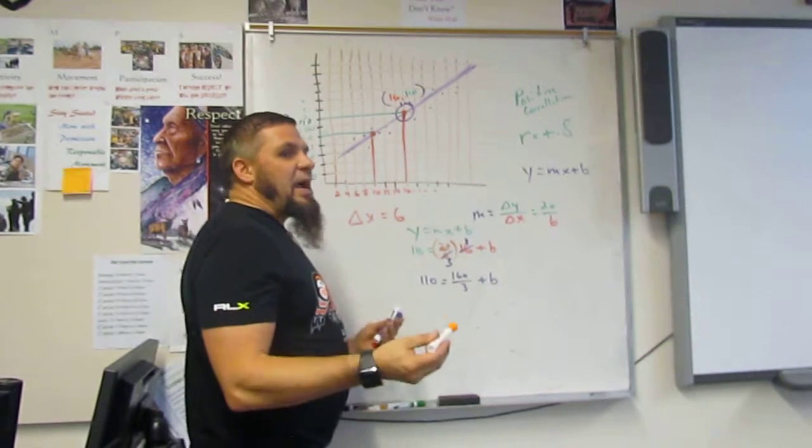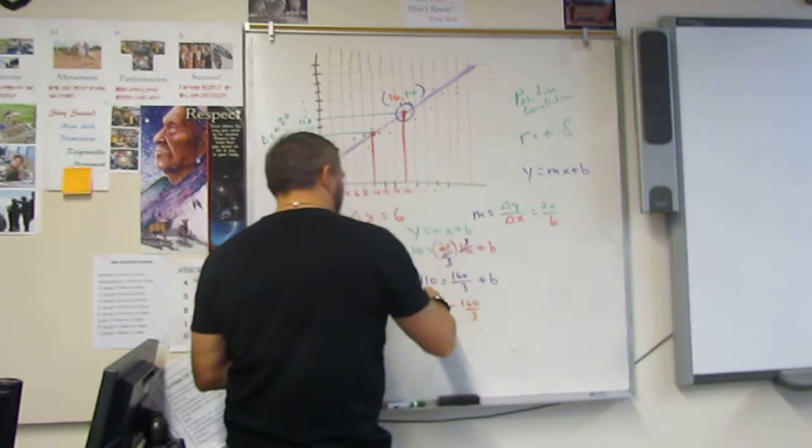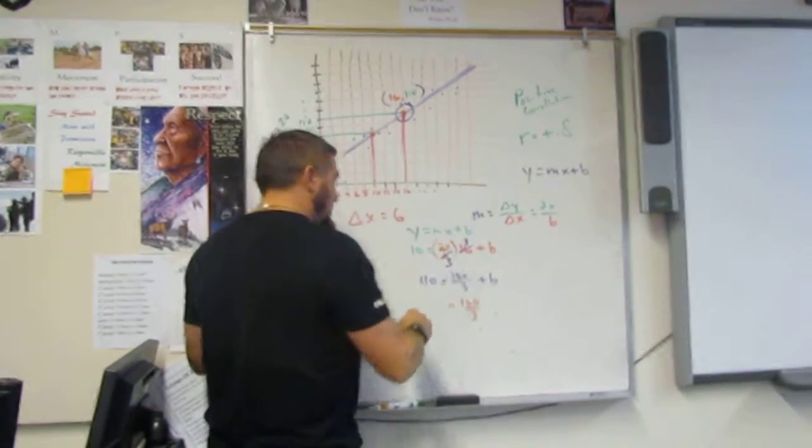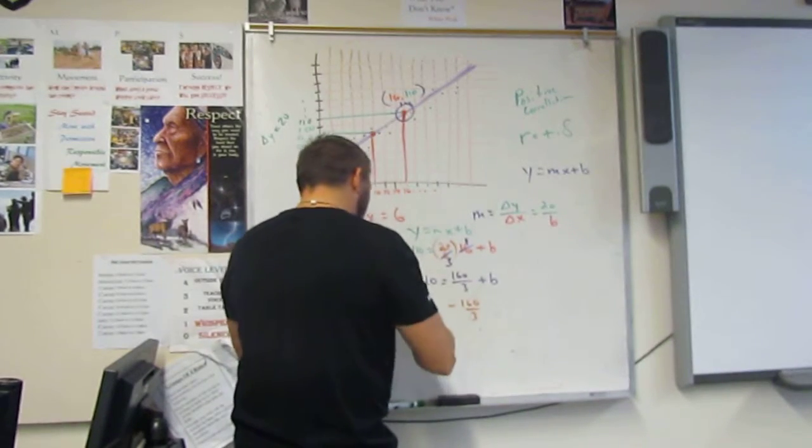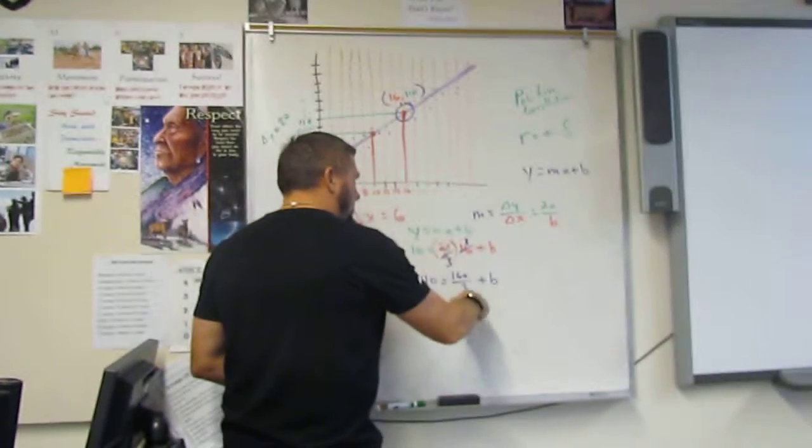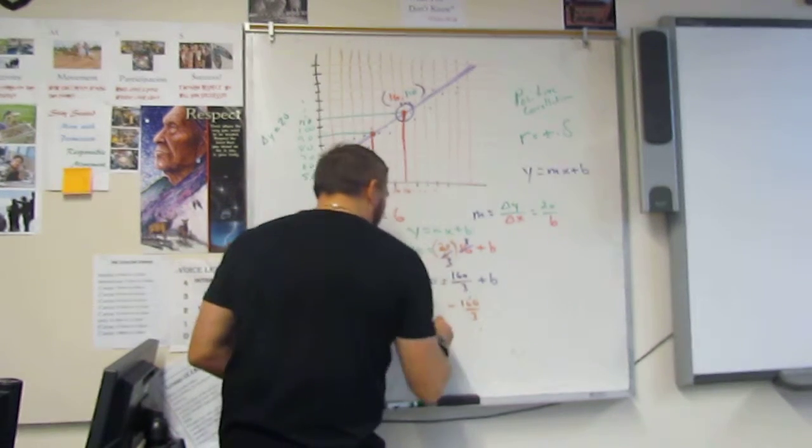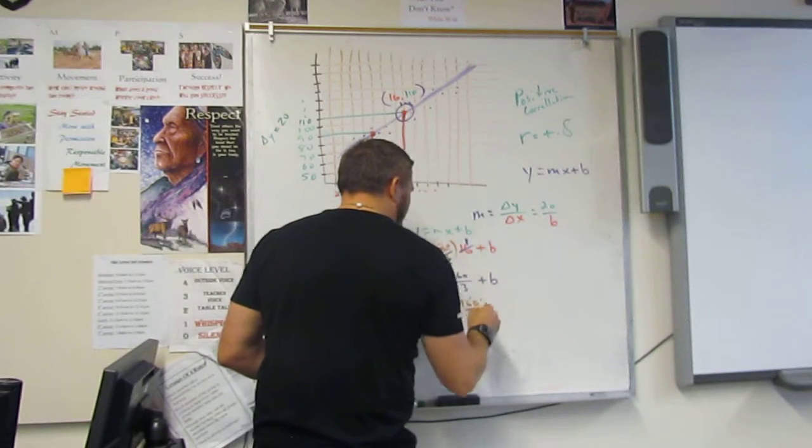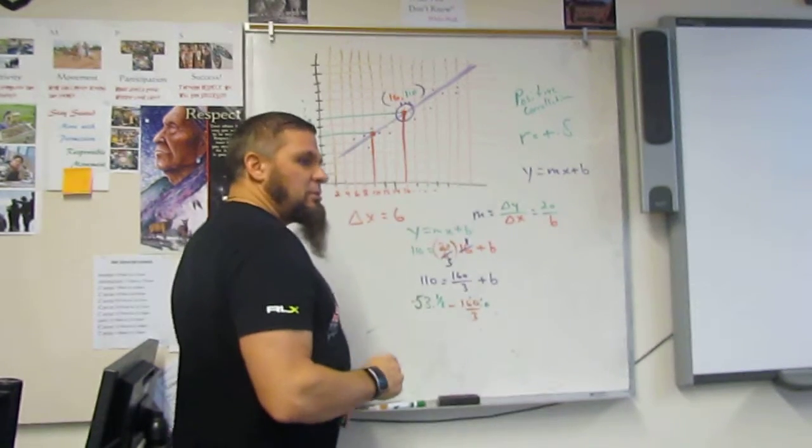Now we're going to subtract 160 over 3 from both sides. What is 160 over 3? How many times does 3 go into 16? 5. Good. With how many left over? 1. And how many times does 3 go into 10? 3. With how many left over? 1. So every single time, it's just going to be 1 left over. So that would be 1 over 3. So 53 and a third.